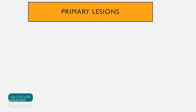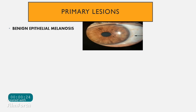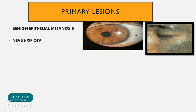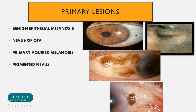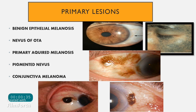Pigmented lesions of the conjunctiva can be primary lesions, occurring because of a disease process inside the eye, or secondary lesions due to systemic conditions in the body. The primary lesions include benign epithelial melanosis, nevus of Ota, primary acquired melanosis, pigmented nevus, and conjunctival melanoma.